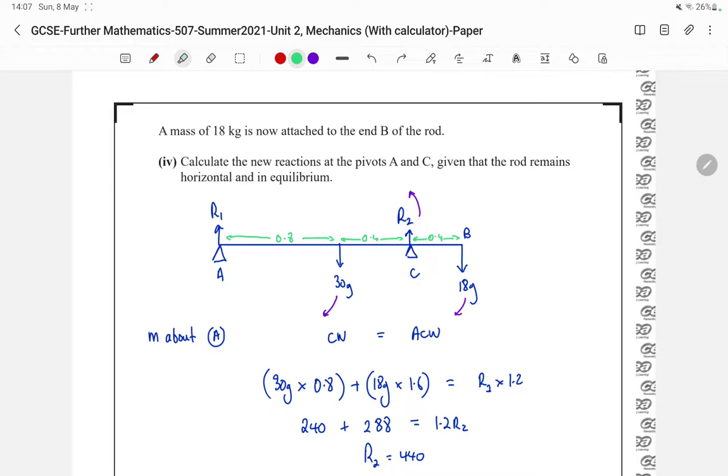Calculate the new reactions at the pivots A and C, given that the rod remains horizontal and in equilibrium. So I've chosen again to take moments about A. I'm going to look at my clockwise moments. My clockwise forces are here and here, and they act at two different distances. Our 30g acts at a distance of 0.8, so that's 30g times 0.8. Our 18g acts at a distance of 1.6, the full length of the rod. So those are our clockwise moments.